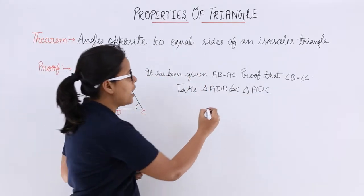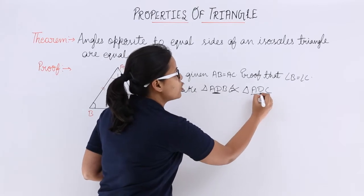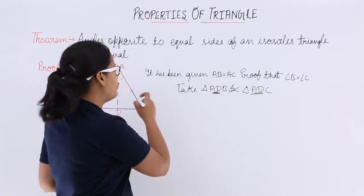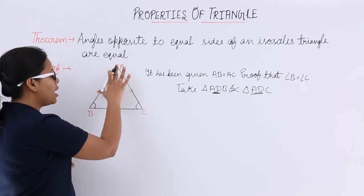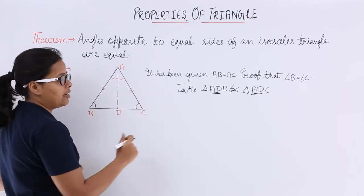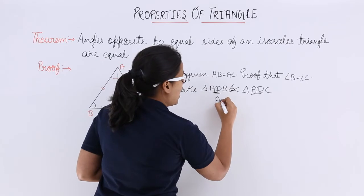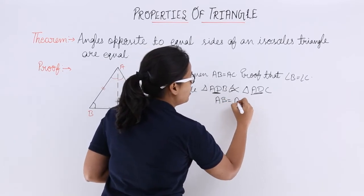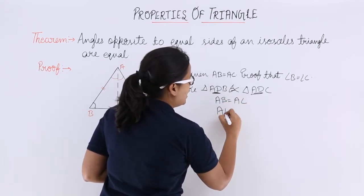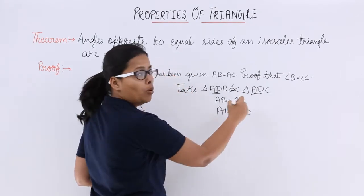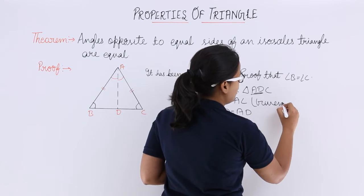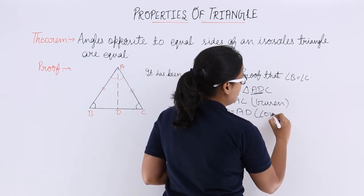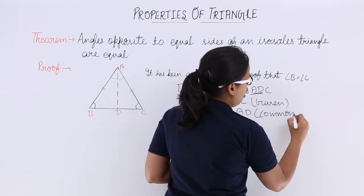You can see here that side AD is common in both of these triangles and it has been given that AB is equal to AC. In both of these triangles, this is given and this is common.